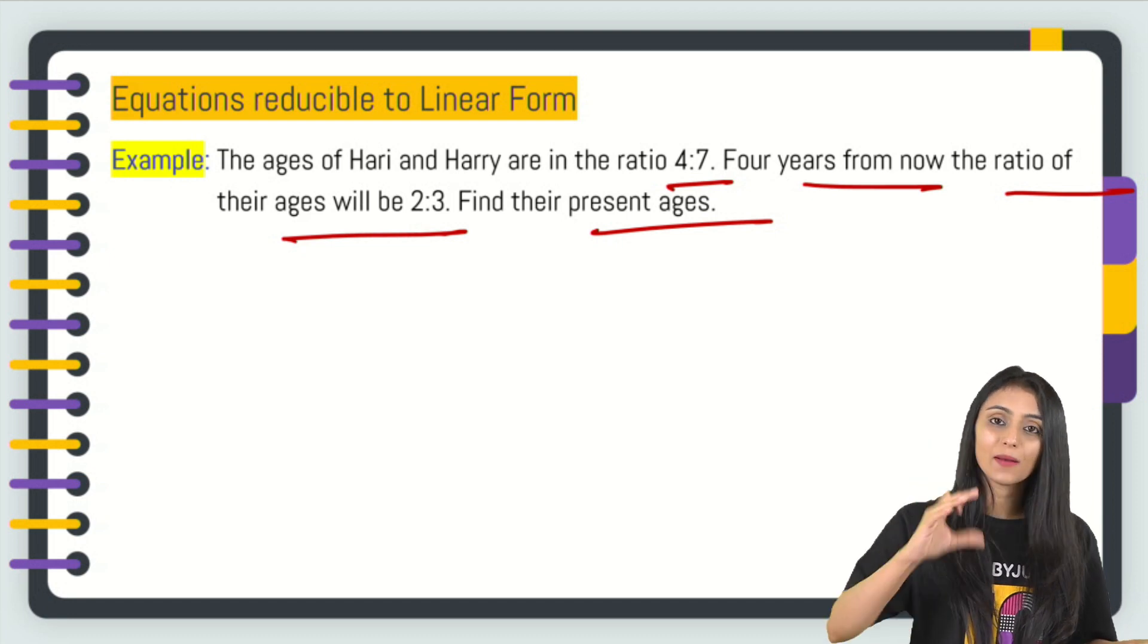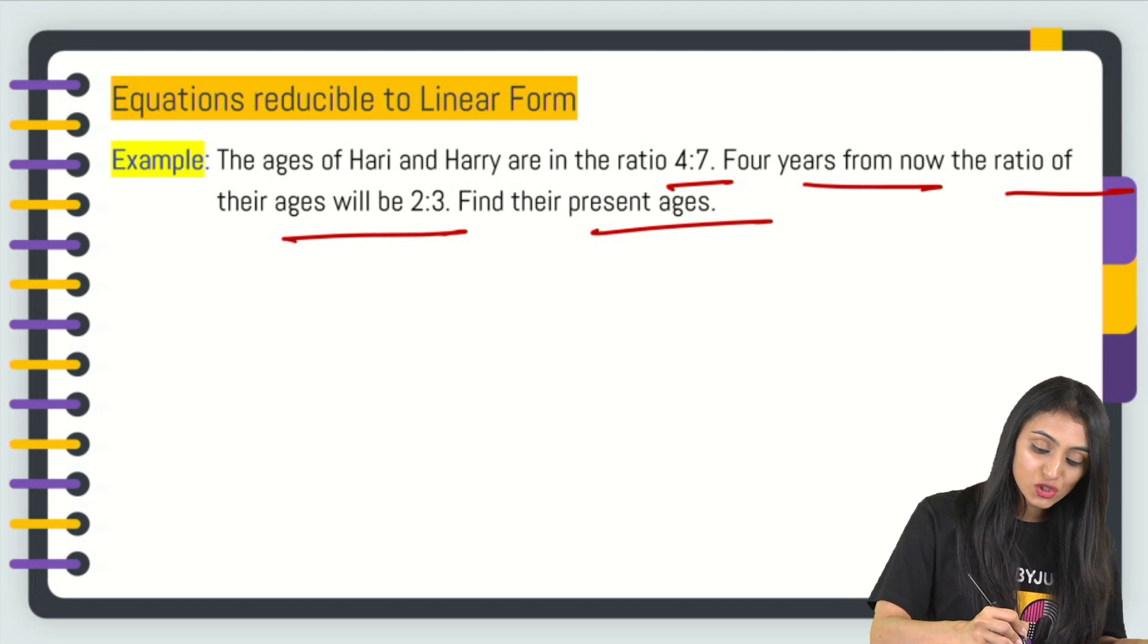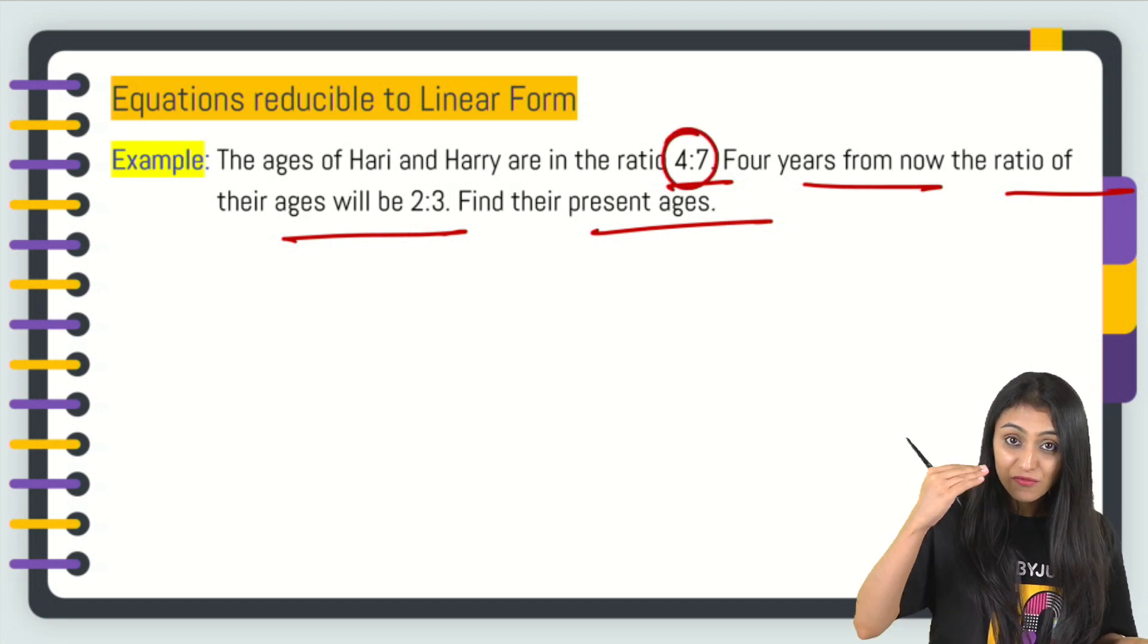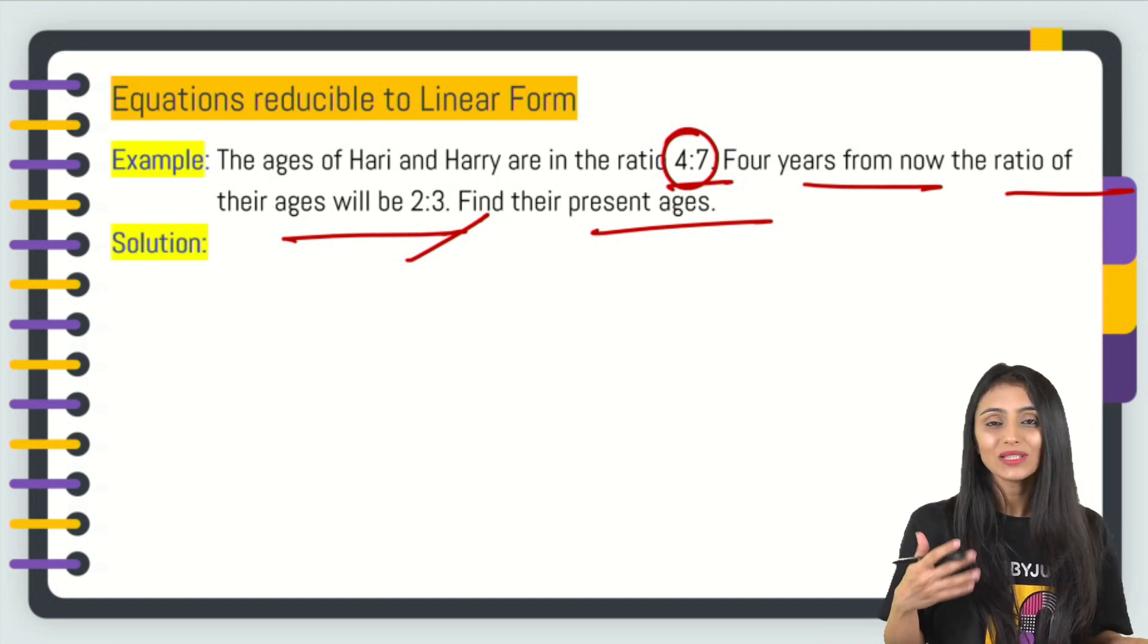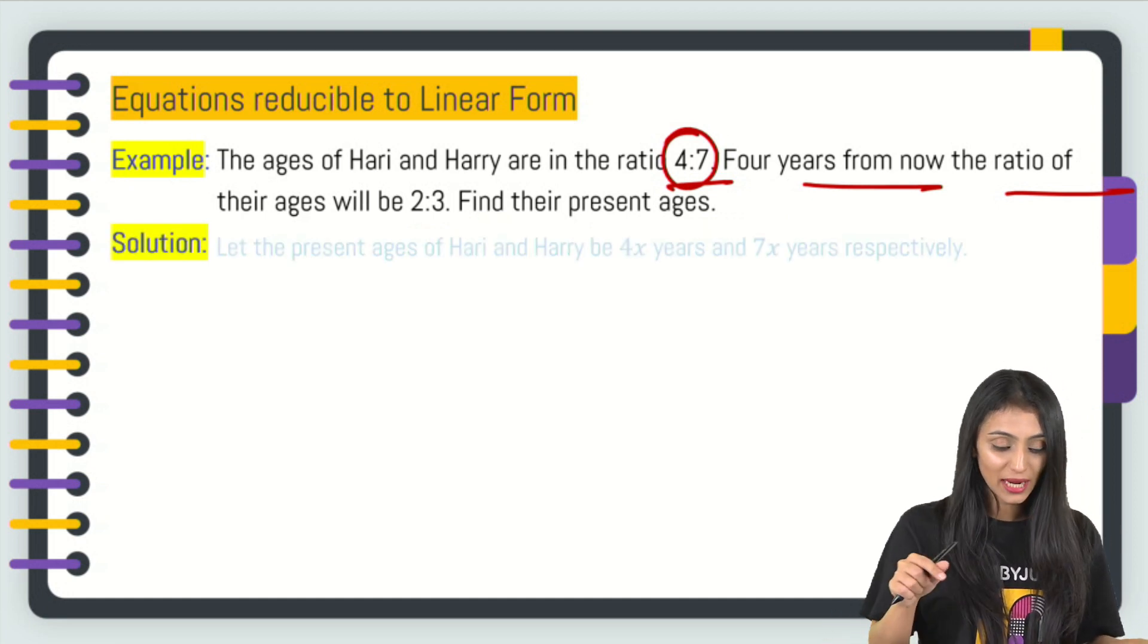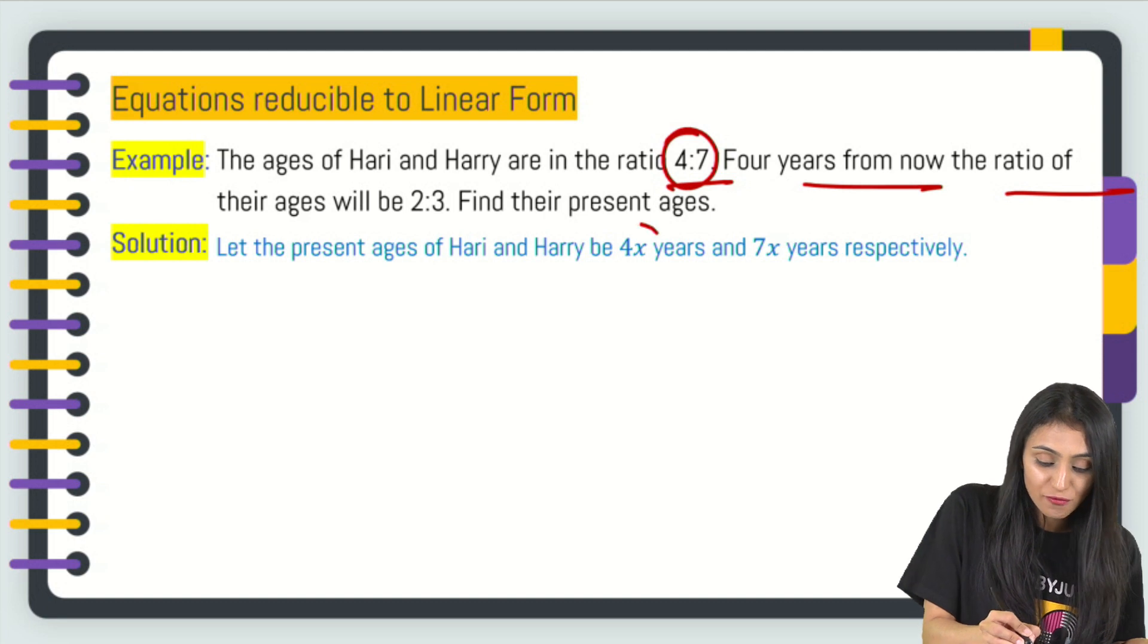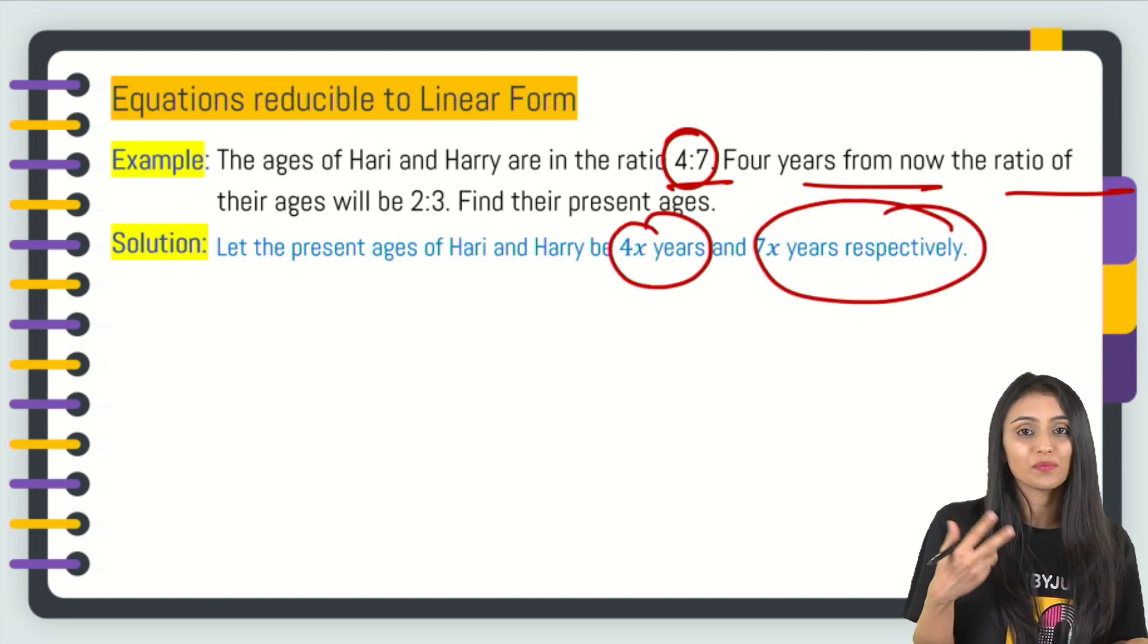The question is asking us to find out the present ages. We are given some relationship—the ratio of their ages is 4:7. But four years from today, the ratio of their ages would be 2:3. We know that ratio is not the exact number, right?